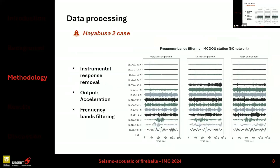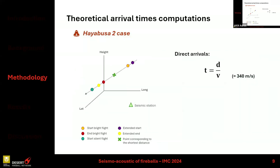For the processing, I will explain what I've done through the example of Hayabusa2. Mainly, I remove the instrumental response and apply frequency band filtering — filtering the data in a narrow frequency band from 0.01 up to 20 Hz. On this figure you can see three different graphs corresponding to the three components of the seismic sensor: vertical, north, and east.